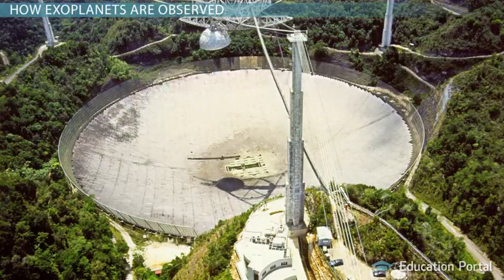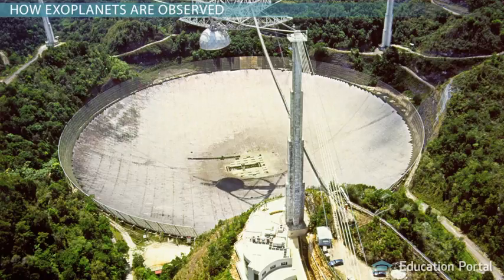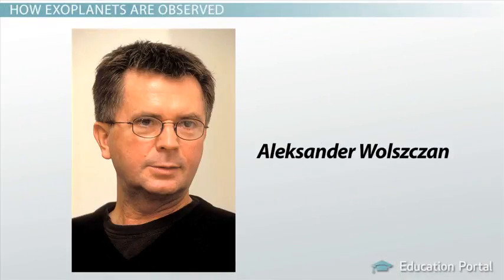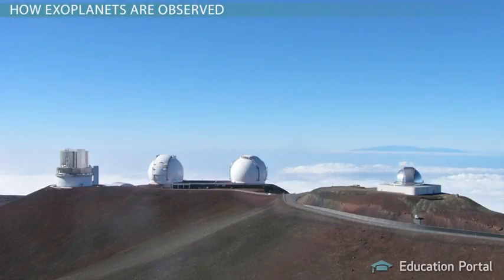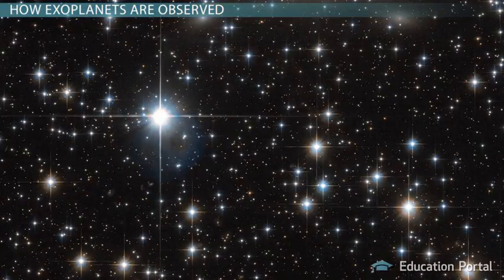It was only in 1994 that the first extrasolar planet was truly confirmed by Dr. Alexander Volshtan of Penn State University. Our technology will one day allow us to detect more and more, but for now, we're limited in what we can see.